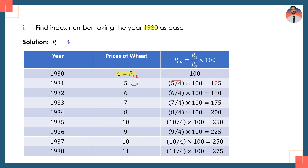Similarly, for 1932: price is 6, so 6 ÷ 4 × 100 = 150. For 1933: price is 7, so 7 ÷ 4 × 100 = 175. Using calculator, aap students one by one tamaam prices ko divide karna hai base year ki price 4 se, aur multiply by 100 karte jao. Is tarah se aapke paas simple price relatives calculate ho jayenge — jisme current year ki prices ko base year ki price se divide kiya hai aur multiply by 100. Index number using fixed-base method.